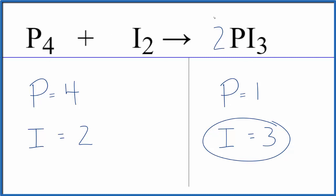So instead of two, let's put this as a four, and now we have one times four. That'll actually balance our phosphorous atoms here.